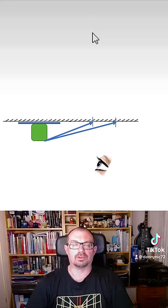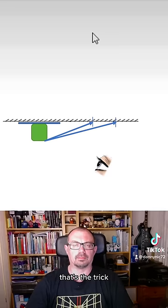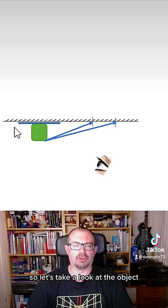If you notice in these videos, you always see behind the paper when the observer or the phone is really close to the mirror. That's the trick. So let's take a look at the object hiding behind a piece of paper.